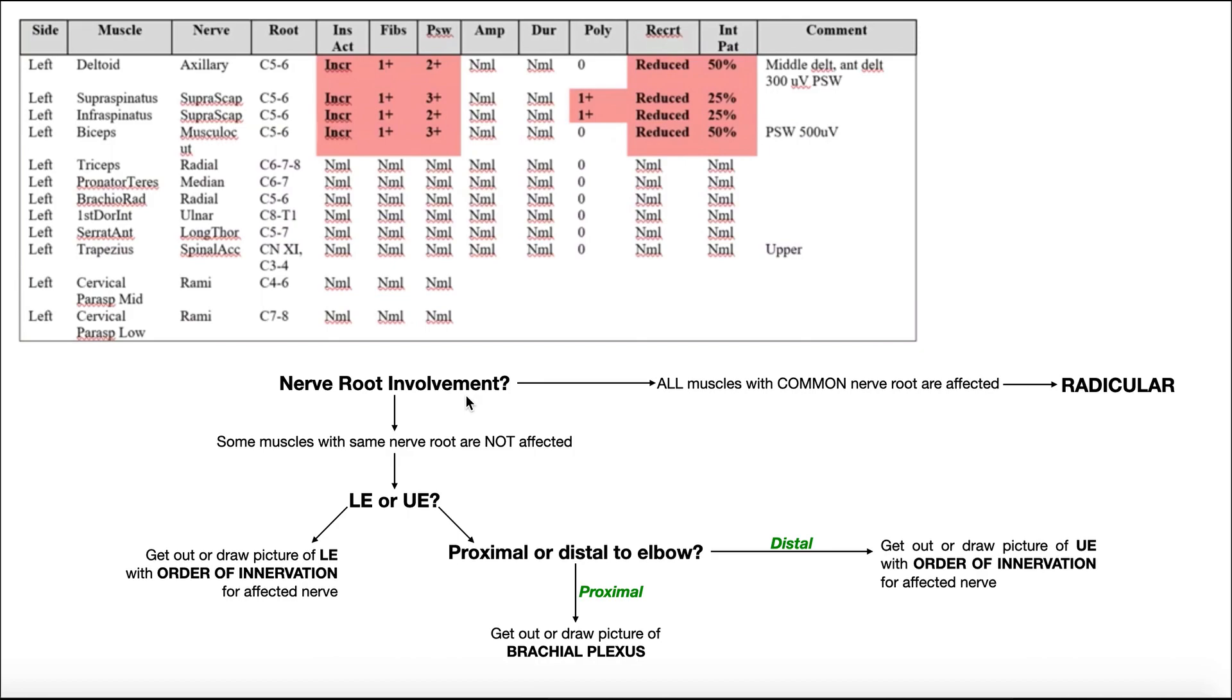The first question we'll ask ourselves is, is there nerve root involvement? And by nerve root, I mean compression or damage to the nerve root. So you talk about a C5 radiculopathy, a C6 radiculopathy, and so on and so forth.